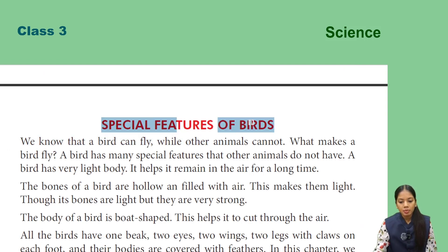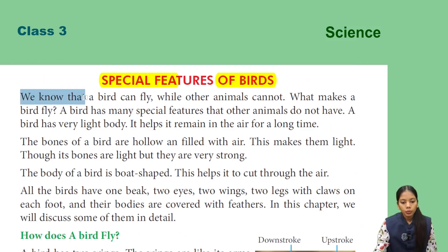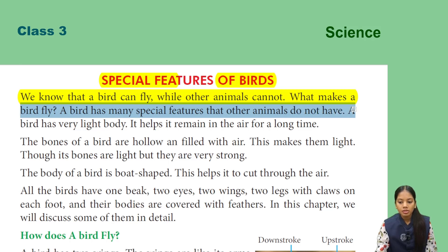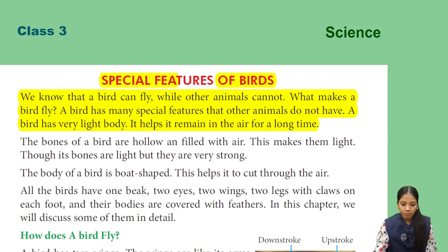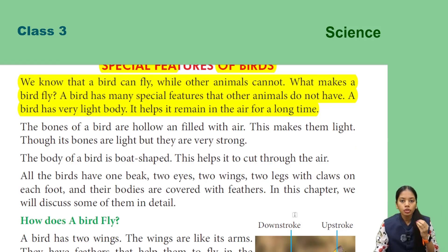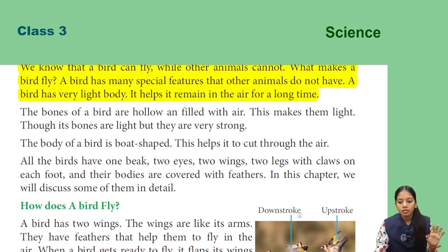First of all, let's read about birds' special features. We know that a bird can fly while other animals cannot. A bird has many special features that other animals do not have. A bird has a very light body, which helps it remain in the air for a long time. Birds' body is very lightweight, which means they can stay in the air for a longer time.